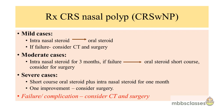For chronic rhinosinusitis with nasal polyp, mild cases receive intranasal steroids, which can be converted to oral steroids if insufficient response; failure leads to CT and consideration of surgery. Moderate cases receive intranasal steroids for three months, then oral steroids for a short course on failure, then surgery. Severe cases receive a short course of oral steroids plus intranasal steroids for one month; upon improvement, consider surgery. Failure or any complication leads directly to CT scan and surgery.